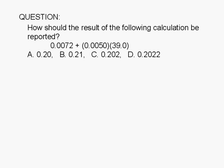How should the result of the following calculation be reported? 0.0072 plus 0.0050 times 39.0. The answer choices are: 0.20, 0.21, 0.202, or 0.2022.